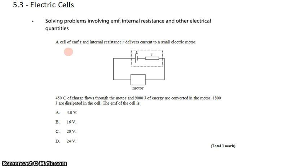In this question, we have a cell with EMF epsilon and internal resistance R. So this is our battery, modeled with an ideal EMF and a little resistor. It delivers a current to a small electric motor.